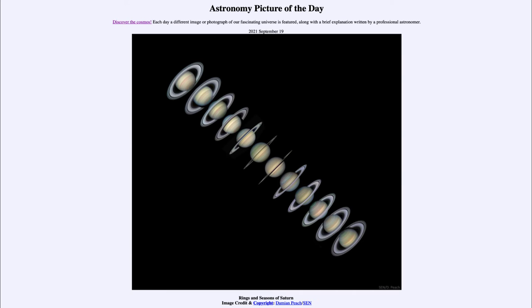Seasons on Saturn are a lot longer than on Earth, taking many years because of its much longer orbit. Seasons are about one quarter of the orbit, and on Earth, an orbit taking about a year means our seasons are about three months long.